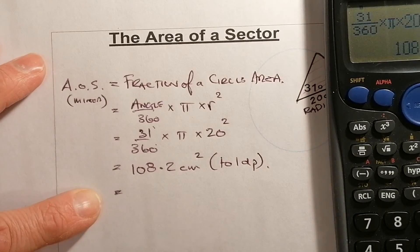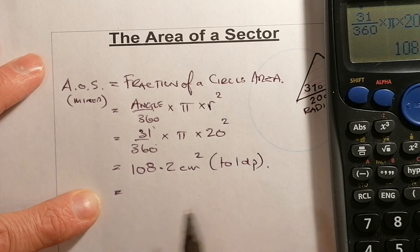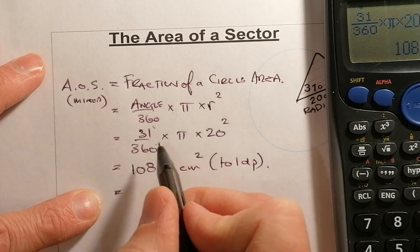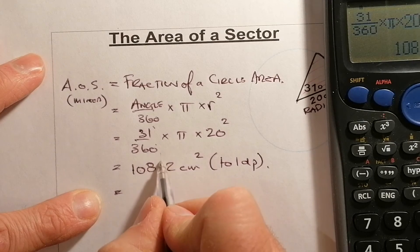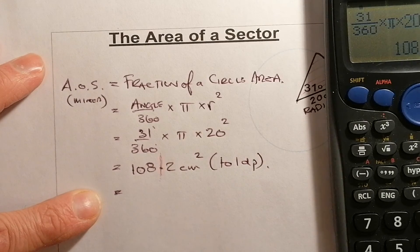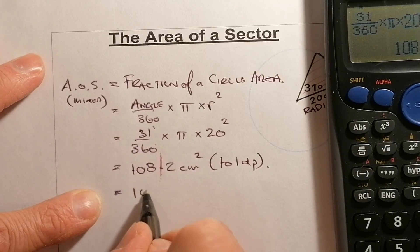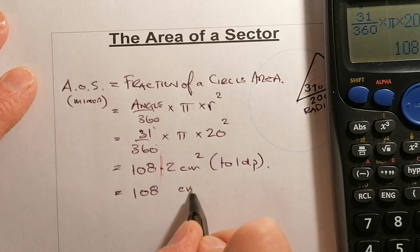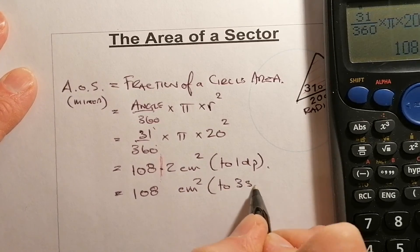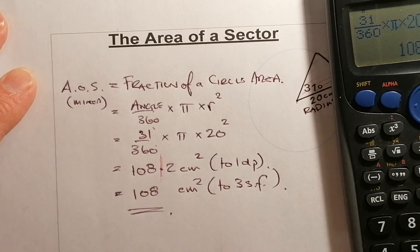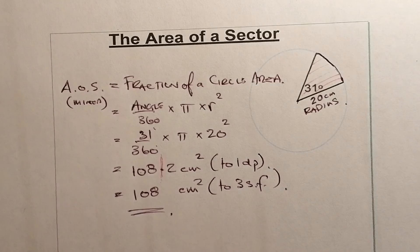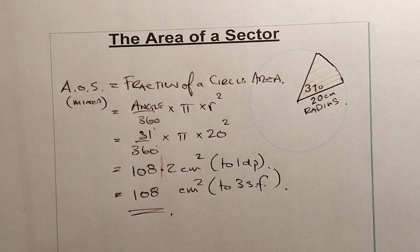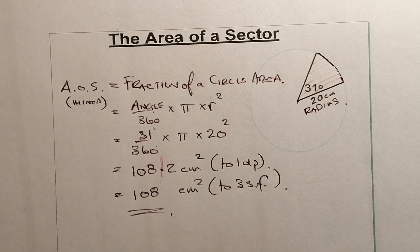To round 108.2 to three significant figures: count in 1, 2, 3 — I cut right at the decimal point. The 2 leaves the 8 as it is, so the answer is 108 centimetres squared to three significant figures. That concludes the area of a sector video. This should give you a good chance to get on with the work I'll put up on Teams. Best of luck.